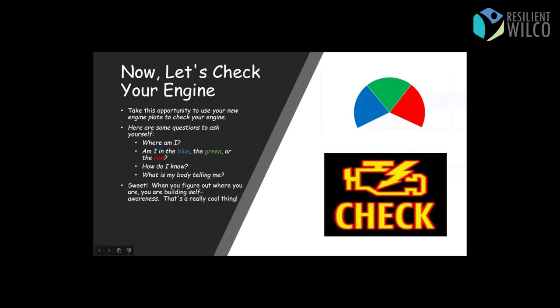Let's check your engine again. This is the opportunity to use your new engine plate if you've been following along with me and have paused and done your project. So here are some questions to ask yourself. Where am I on the engine plate? Am I in the blue, the green, or the red? And how do I know? What is my body telling me? Are my eyelids droopy and my muscles kind of heavy? That means maybe I'm in the blue. Or are my muscles tense? Are my shoulders creeping up to my ears? Is my jaw clenched? Those are signs that maybe I'm in the red. Or am I just chilling and I'm in the green and life is good and I'm calm. Okay. So wherever you find yourself on the engine plate, it's okay. The goal here is to build self-awareness and that's a really big, cool thing that you get to do right now by using this tool for yourself. So check your engine. I'm going to give you another three seconds to check your engine and see where you're at. Okay. Got it. Good.